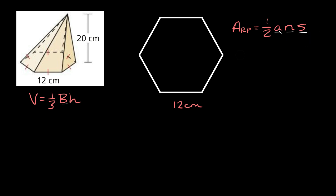Let's start with the first variable, the apothem. If you don't remember what that is, it's simply the distance from the center of the polygon over to one of the sides. I'll draw it straight down to this bottom side right here. It hits the side right at the midpoint, splitting it in half, and it creates a right angle — a 90-degree angle — with the side. So the distance from the center over to the side is the apothem.